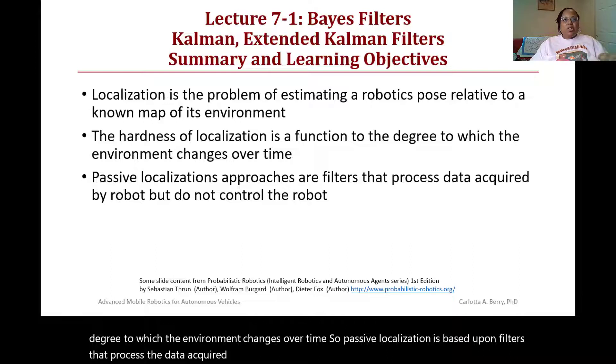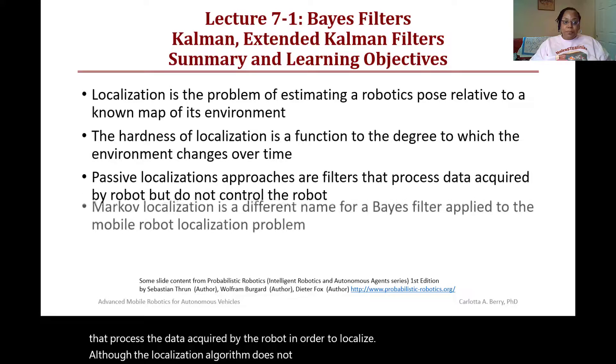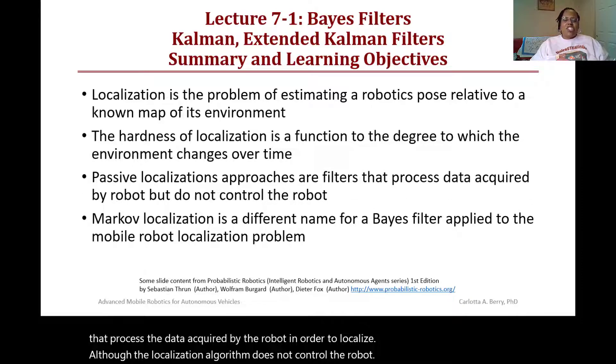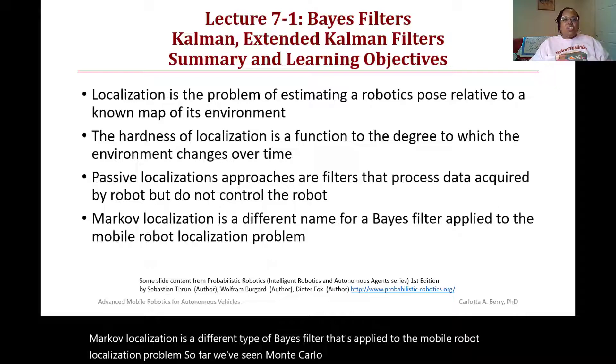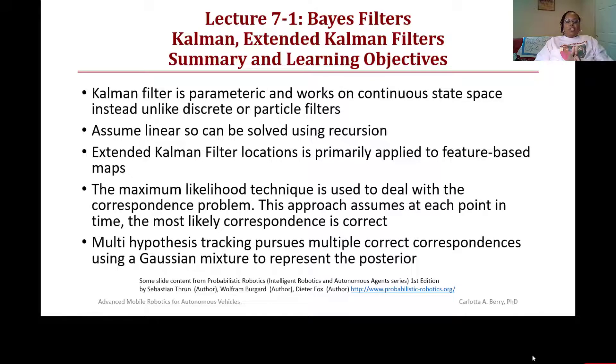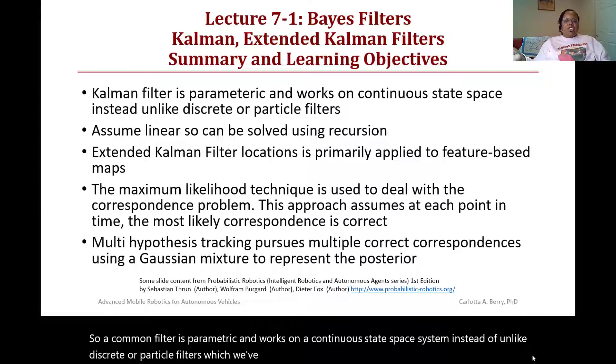Passive localization is based upon filters that process the data acquired by the robot in order to localize, although the localization algorithm does not control the robot. Markov localization is a different type of Bayes filter applied to the mobile robot localization problem. So far we've seen Monte Carlo localization and discrete and particle filters for localization.